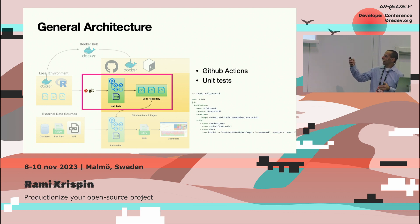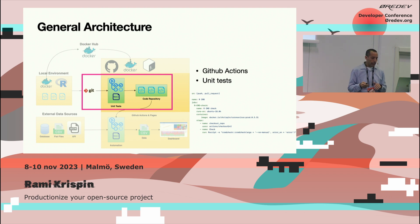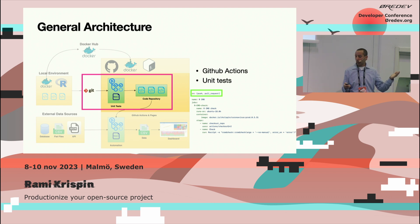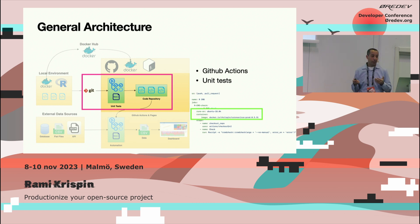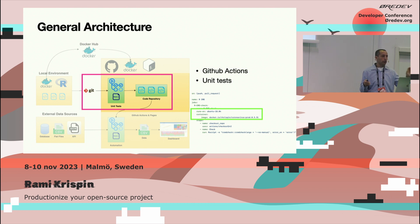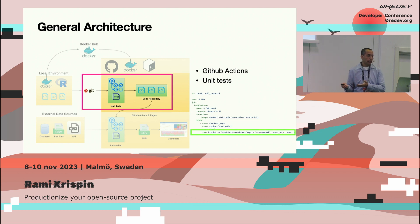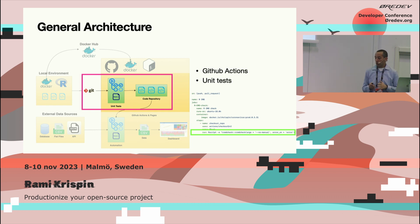This is the YAML file — about 14 lines of code. Here you define when to trigger your workflow: in this case it's a test triggered whenever I push code or have a pull request. You define the environment — you can build on the fly but it's not recommended; it's easier to bring your own Docker image since you've already tested it. Then you run a unit test script that defines which tests to run.